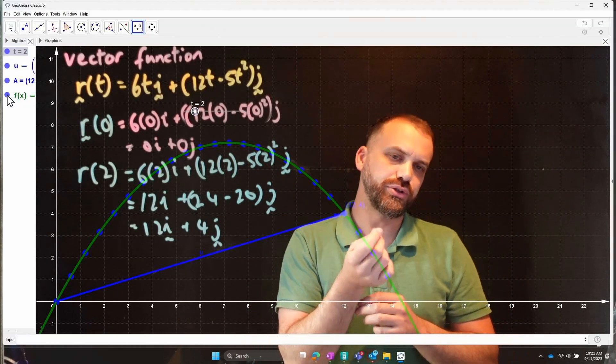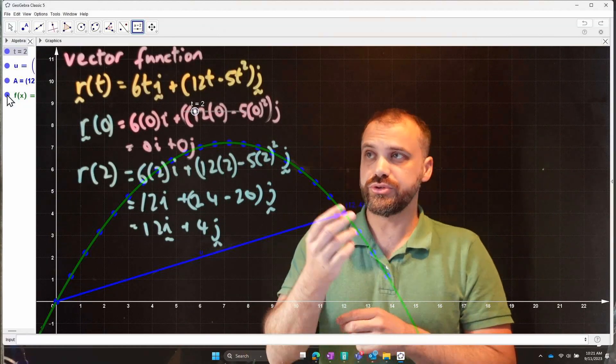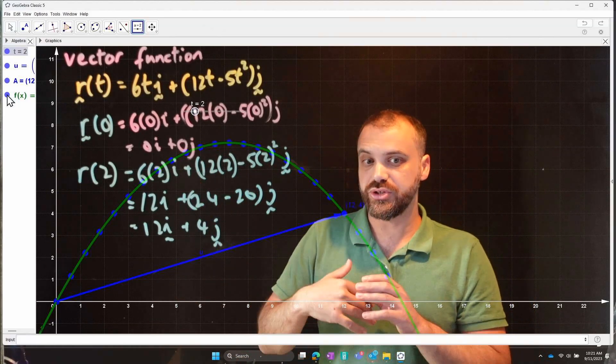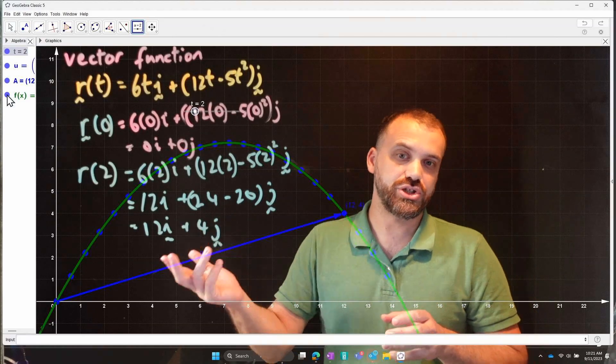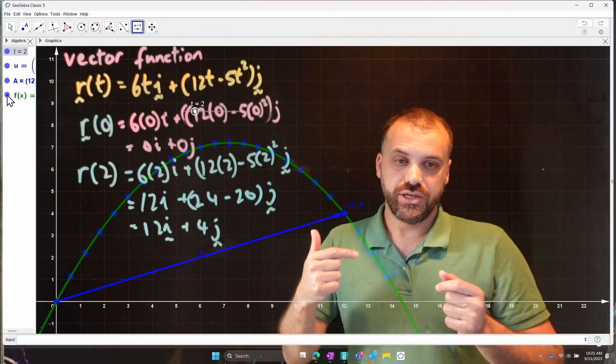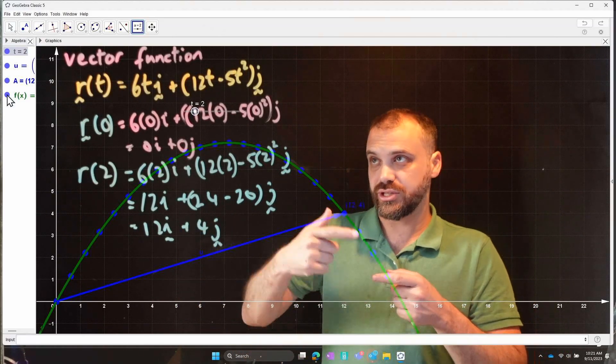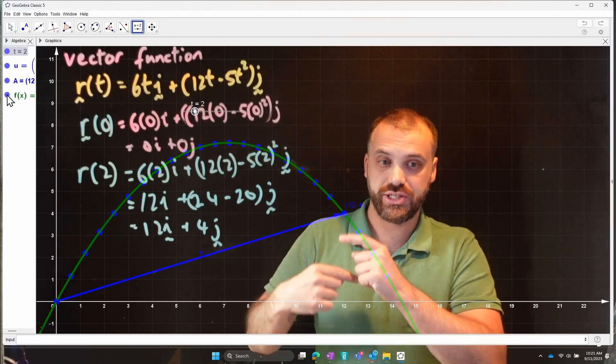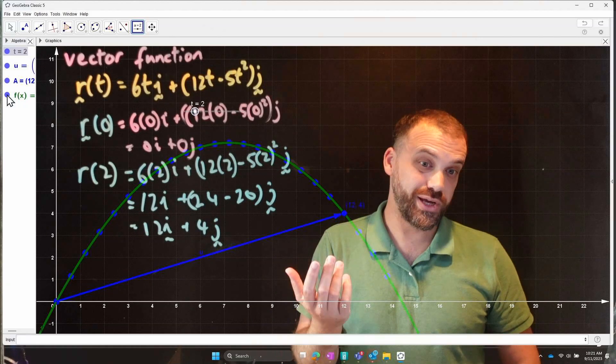When we do that, we lose information. We lose the time information, but we get a Cartesian equation, and we can do all the things that we've done with Cartesian equations in the past. So the next thing we're going to learn is learning how to convert a vector function to a Cartesian function or equation.